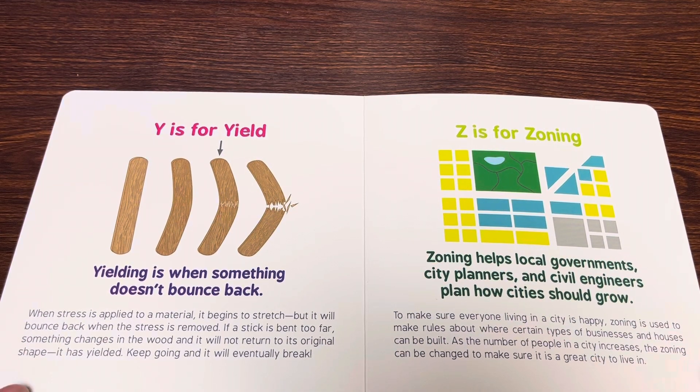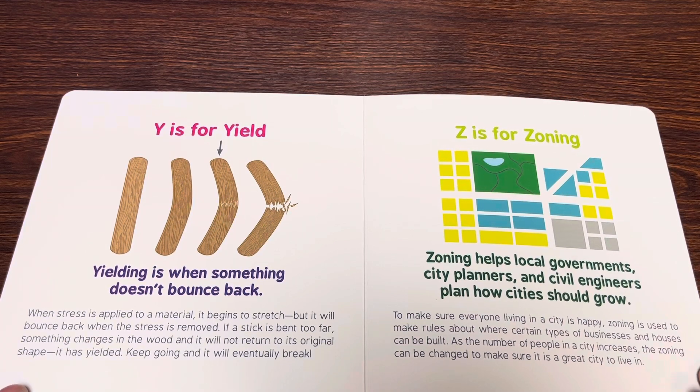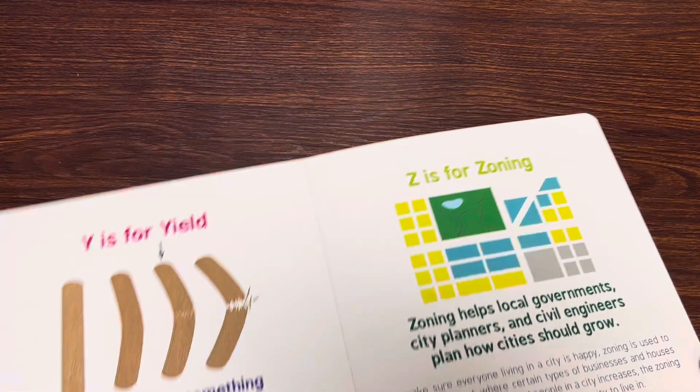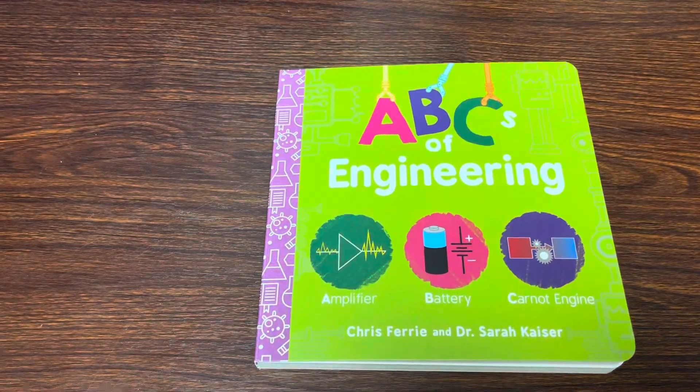Z is for zoning. Zoning helps local governments, city planners, and civil engineers plan how cities should grow. The end.